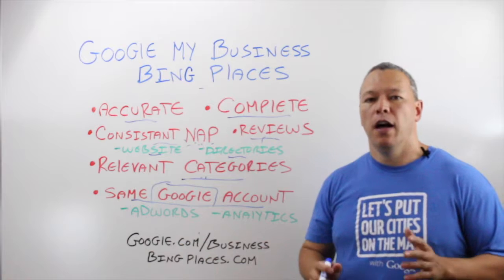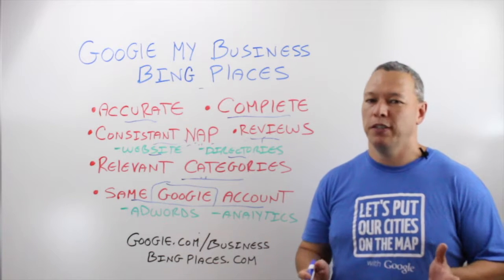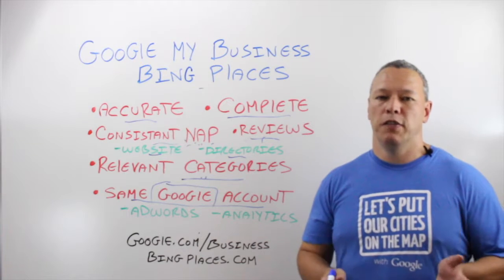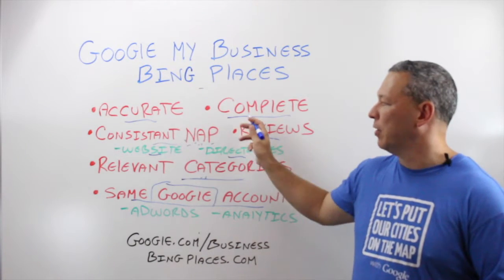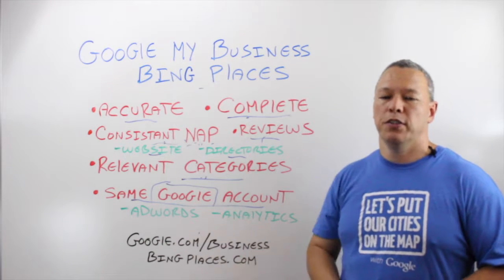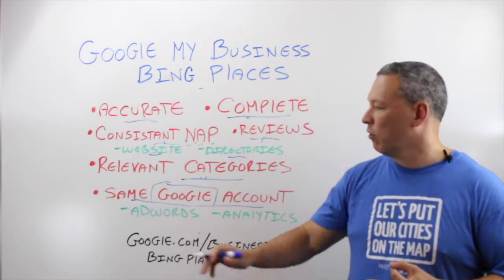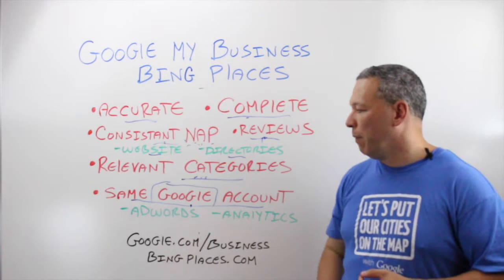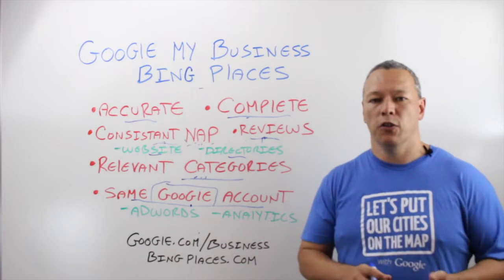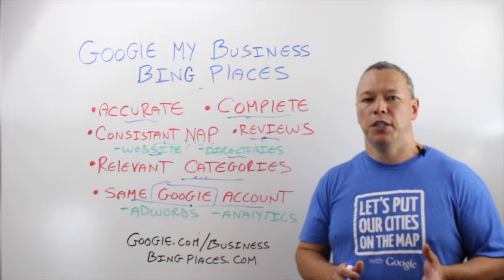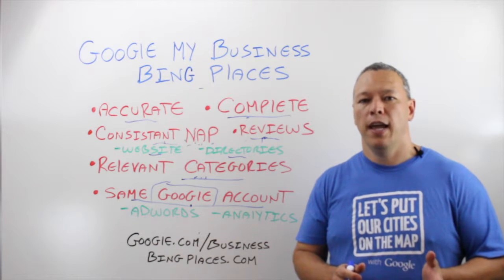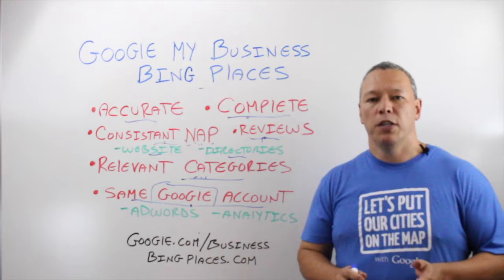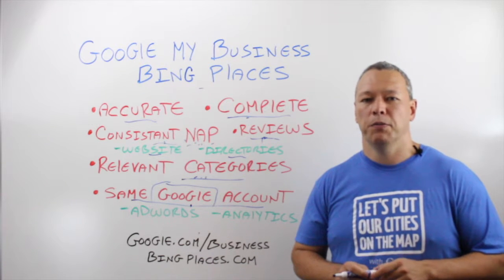This isn't a full tutorial on how to set up the page — it's pretty self-explanatory when you go to google.com/business or bingplaces.com. The key is to follow these tips: make sure your listing is accurate and complete, keep your name, address, and phone number consistent across all properties, get customer reviews, choose the right categories, and use the same Google account across all your Google services. That will give you the foundation to get the most out of your Google My Business page and get you on the right path to good rankings. Thanks for watching!